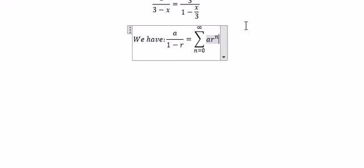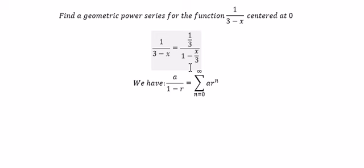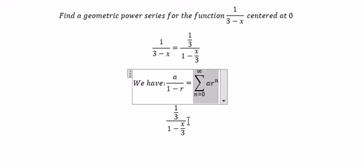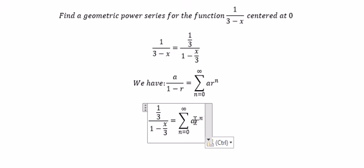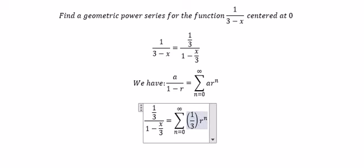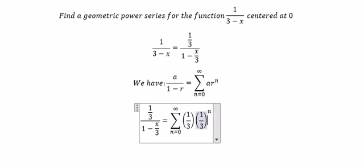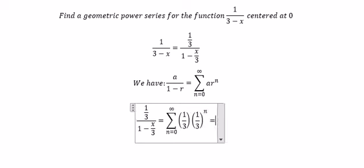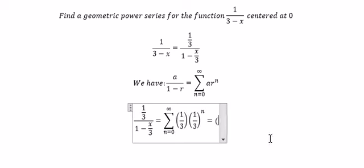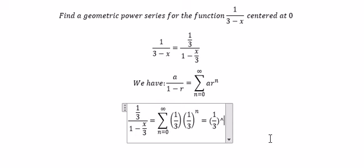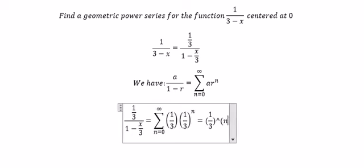So we will apply the number in here. a is about 1 over 3, r is about x over 3. So we will get about a, we change 1 over 3, so we got about 1 over 3 to the power of n plus 1.